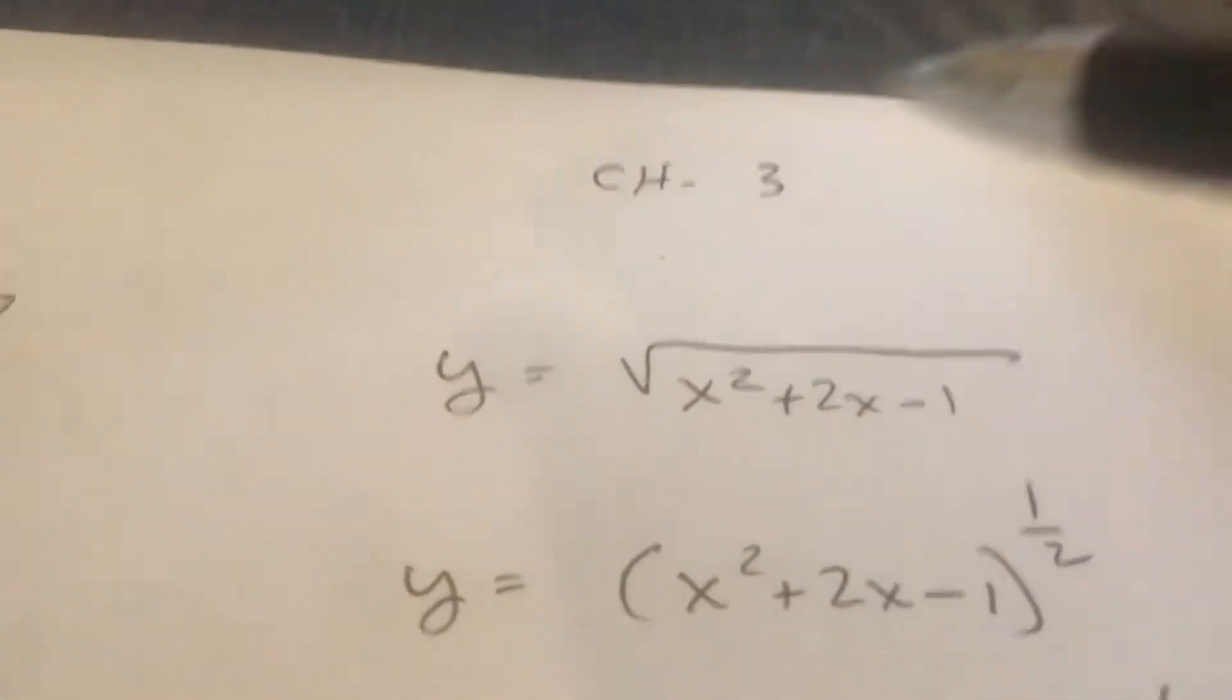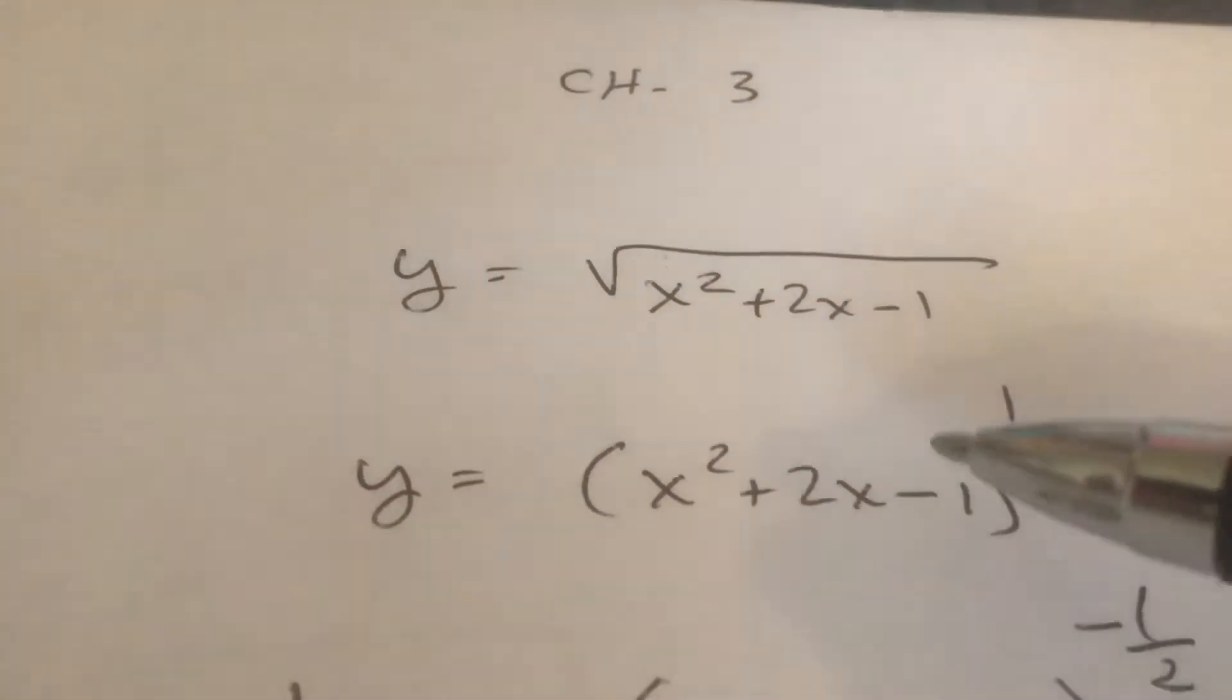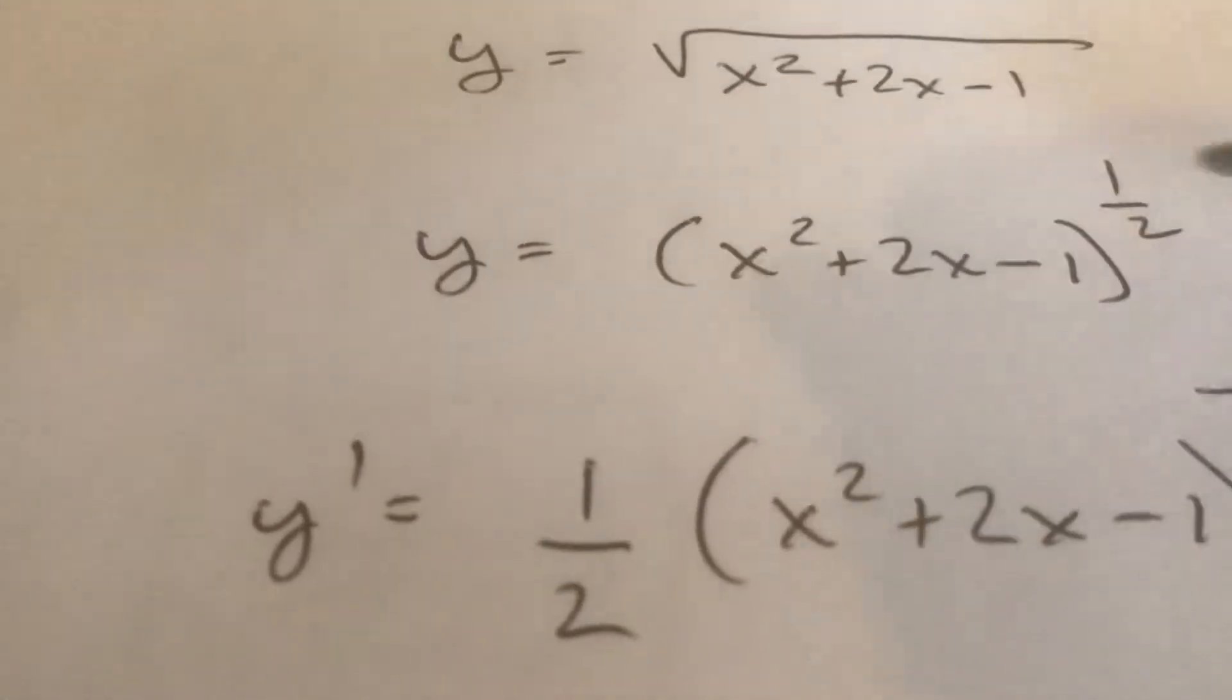So the first thing you do is you let y equal x squared plus 2x minus 1 to the 1 half and now we take the derivative.